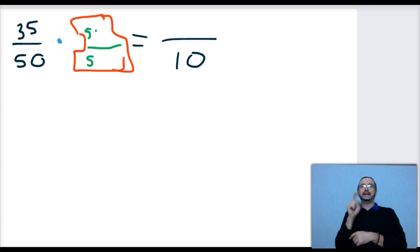But 5 times what equals 35? Oh, 7. 5 times 7 equals 35. Showing that 5 can go into 35 seven times, and that's going to be my number here.